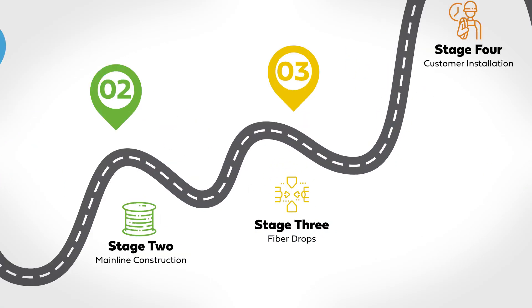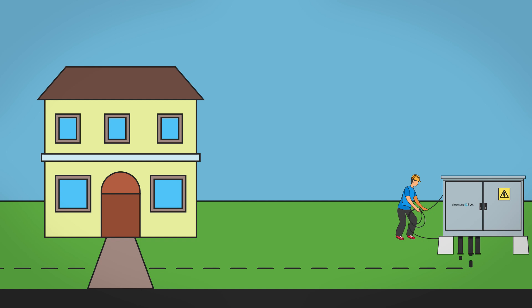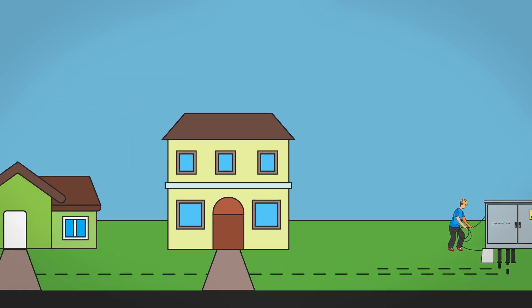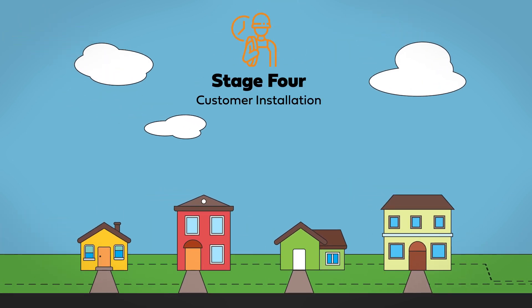Stage three is made up of fiber drops. In this stage, we extend the fiber cables from our network to your home so you can enjoy high-speed internet. Sometimes, this happens at the same time as stage four, customer installation.